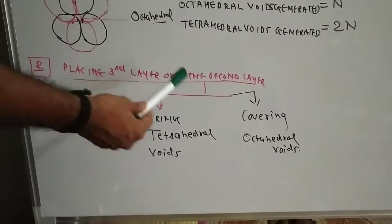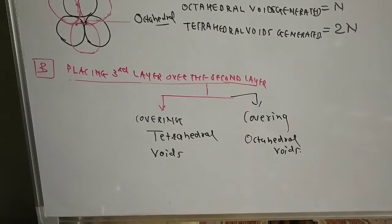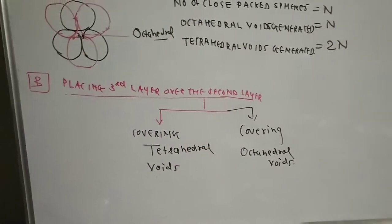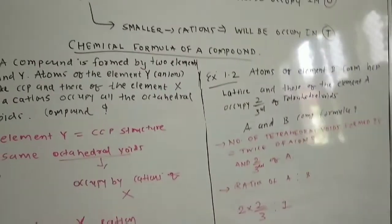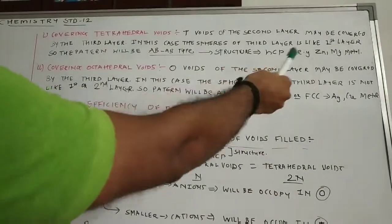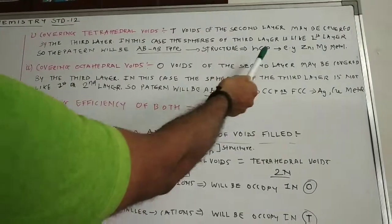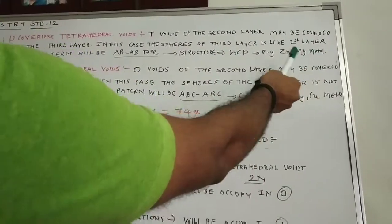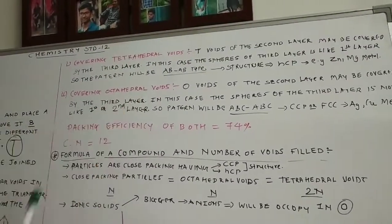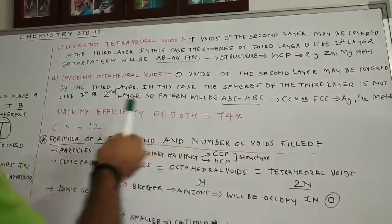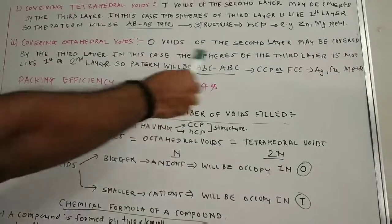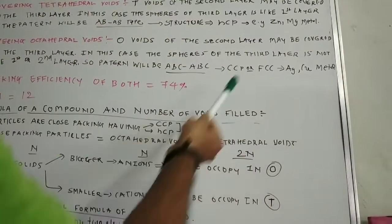Now we have to go for placing the third layer over the second layer. This can be achieved by covering two types of voids: one is the tetrahedral void and the second is the octahedral void. Covering the tetrahedral voids means the tetrahedral voids of the second layer are covered by the third layer. In this case, the spheres of the third layer are like the first layer, so the pattern will be AB AB type, and the structure will be HCP — hexagonal close packing. Covering the octahedral voids means the third layer spheres are not like the first or second layer, so the pattern will be ABC ABC type, and the structure will be CCP or FCC.